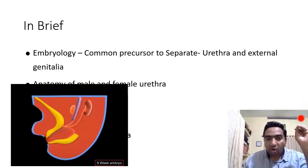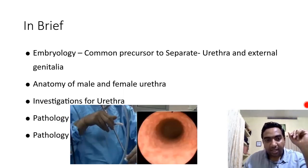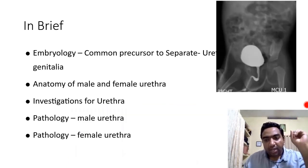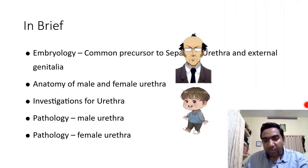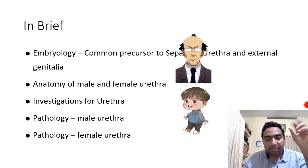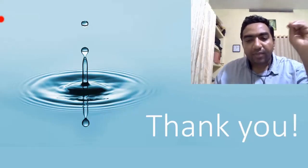In brief, we have discussed the embryology of the urethra — the common precursor giving rise to separate urethra and external genitalia. Then the anatomy of the male and female urethra. Then the investigations — internal anatomy by cystoscopy, external anatomy by retrograde urethrogram and MCU, surrounding anatomy by CT. Then the pathology of the male urethra: urethral injury and urethral stricture in adults; posterior urethral valve and hypospadias in children. Then the pathology of the female urethra: functional and anatomical problems. That is regarding the urethra. Thank you.